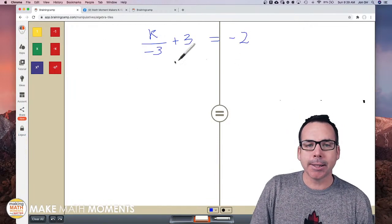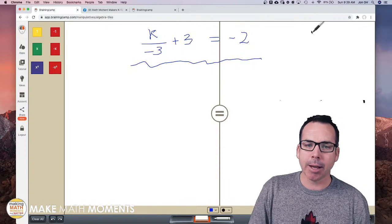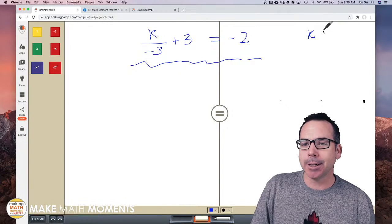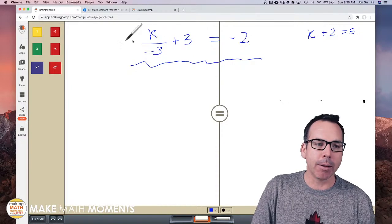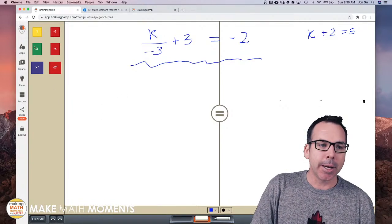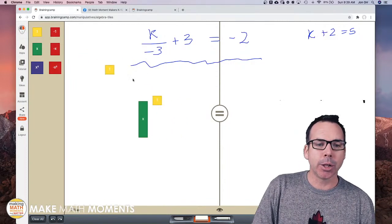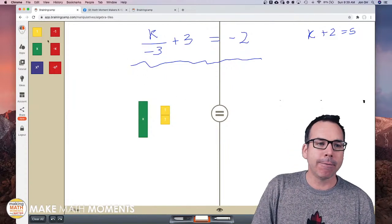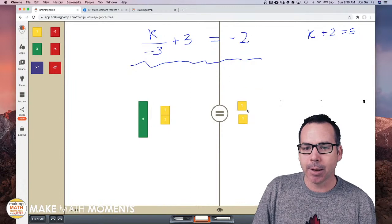Normally what you would do - if this is your first time with algebra tiles there are other videos here to help you - but if I just had like K plus two equals five, what you would do on your algebra tile is model the K value with your unknown value of X. I'm going to grab the X and drag it to the left side of the equation, and then I'm modeling adding two to it. So here's one and two - here's an X plus two or K plus two modeled. Over here I've got five, so I've got to say that equals five over here.